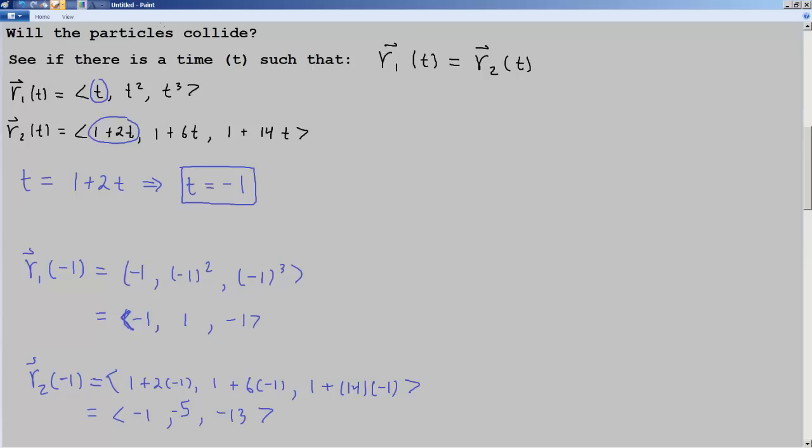And right there we have our answer. The answer is no. They do not collide. And here's why. The first component agrees, negative 1 and negative 1. The second component is 1, but the second component over here is negative 5. 1 does not equal negative 5, particles do not intersect. And we're done.